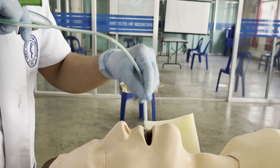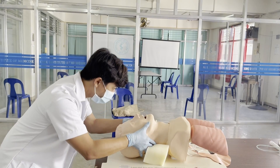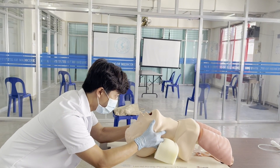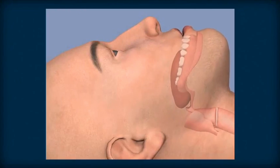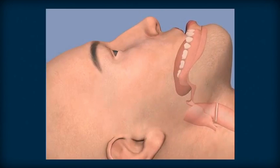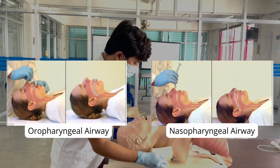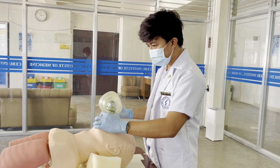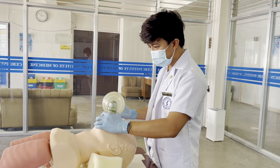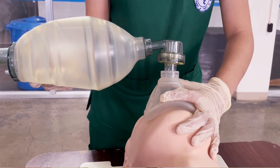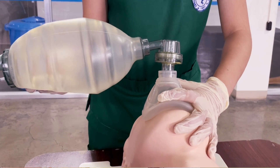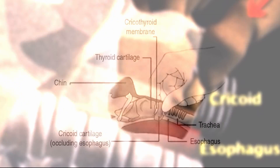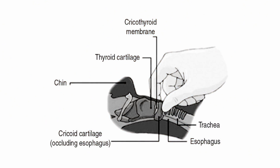Suction secretions that may cause airway obstruction. Then perform the jaw thrust maneuver by moving the tongue anteriorly with the mandible, minimizing the tongue's ability to obstruct the airway. To maintain the airway, an oropharyngeal airway can be inserted through the mouth or a nasopharyngeal airway through the nose. A few minutes of pre-oxygenation is started prior to intubation whenever possible. Hold the mask with good grip to ensure an airtight seal. The Sellick maneuver is performed to help align the airway structures and reduce the risk of regurgitation.